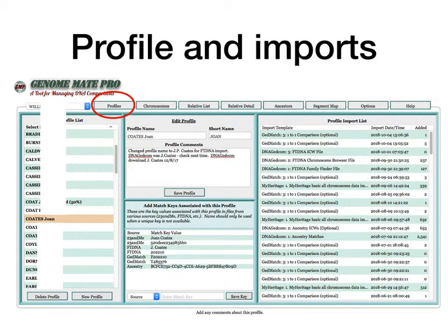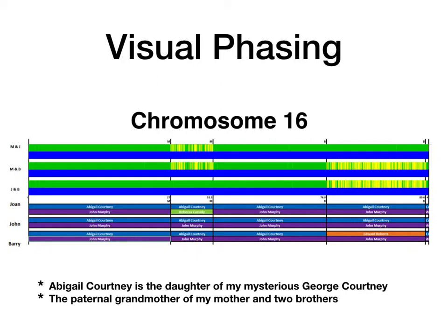This is another screen from Genomate Pro. Basically, this is where it shows different profiles that you're looking at — you set up profiles for someone whose kits you'll manage or a close cousin that you want to track. It has details of imports there.